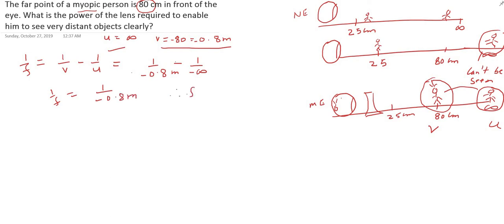Therefore, f comes out to be minus 0.8 meters. This is the focal length of the concave lens, which forms the image of the object at infinity at the far point of 80 centimeters. This is the focal length of the corrective concave lens.